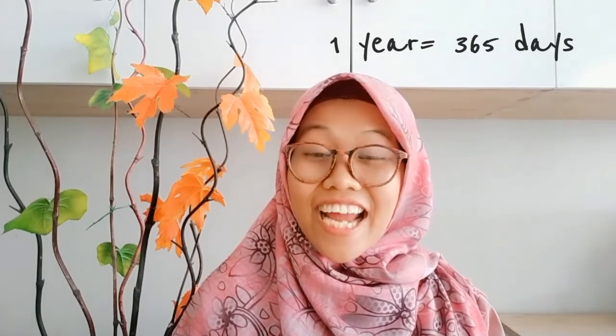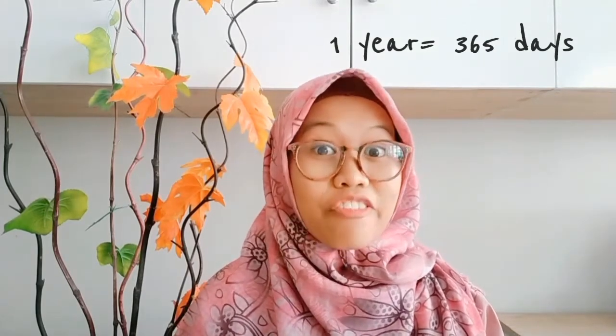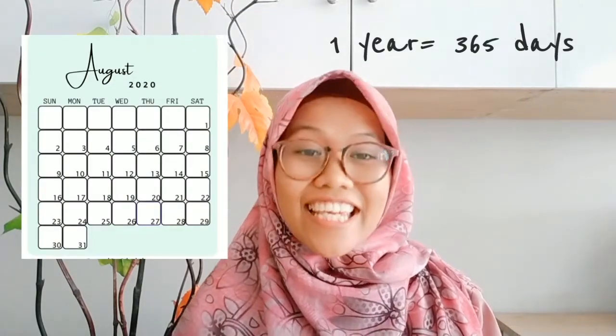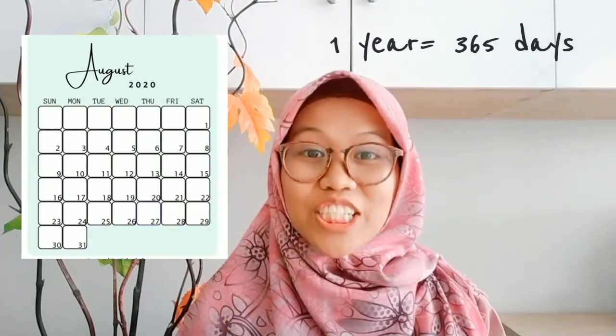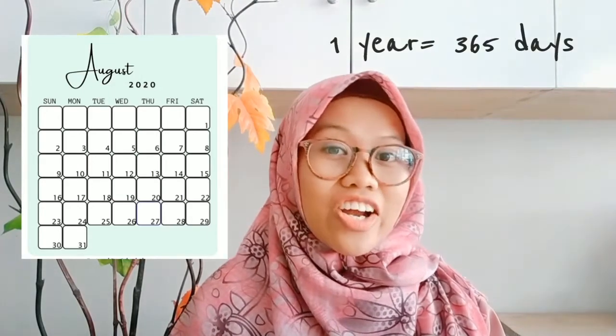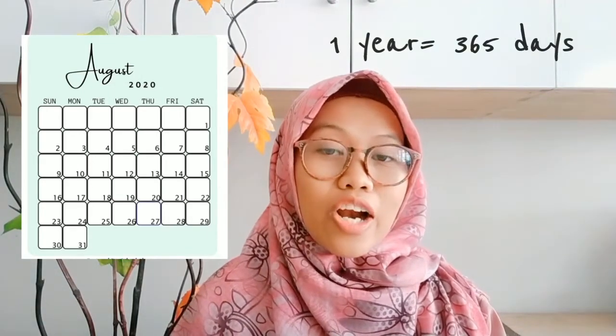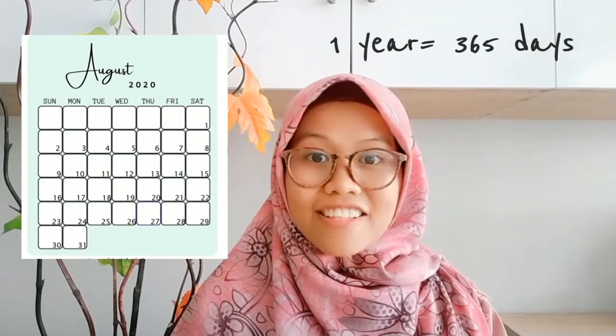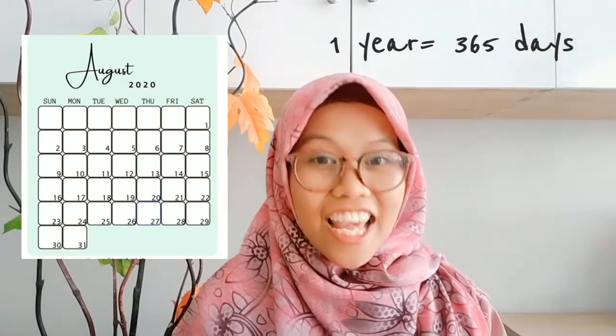In a year, there are 365 days. How do we know that? We can use a calendar. In a calendar, there are the days, the months, and the year.